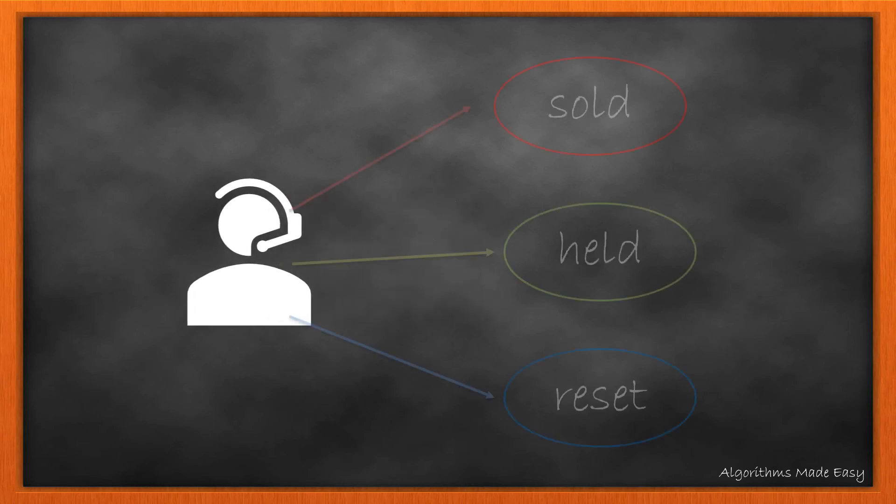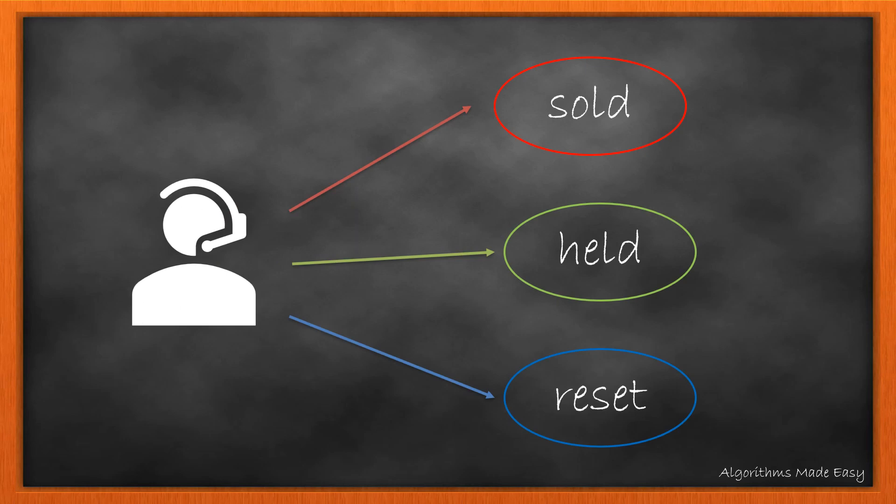Playing by the rules given in the question, the agent cannot engage in multiple transactions. The agent at any given day will be in one of the three states.